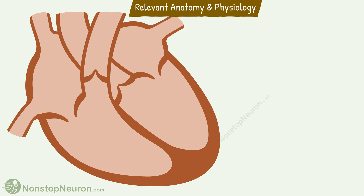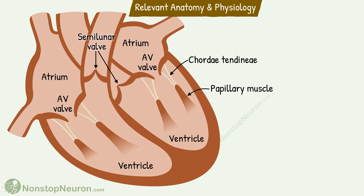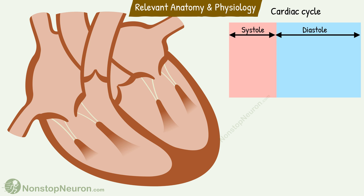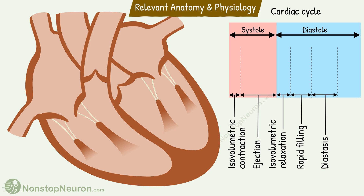First let's quickly revise some basic points. The heart has two atria and two ventricles. The valves between the atria and ventricles are called atrioventricular valves. Their cusps are attached to chordae tendineae, which in turn are attached to papillary muscles of ventricles. The valves between ventricles and the major arteries are called semilunar valves. Broadly there are two phases of the cardiac cycle: ventricular systole and diastole. Systole includes isovolumetric contraction and ejection phase, and diastole includes isovolumetric relaxation, rapid filling, diastasis, and atrial systole.